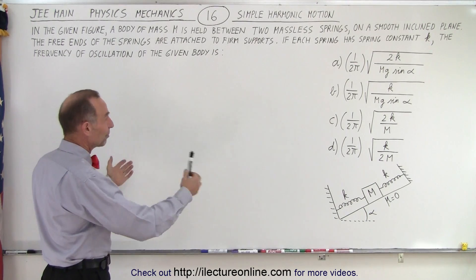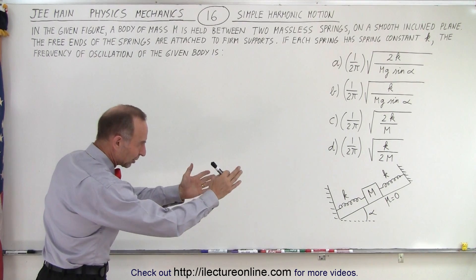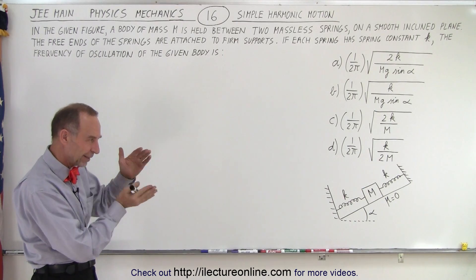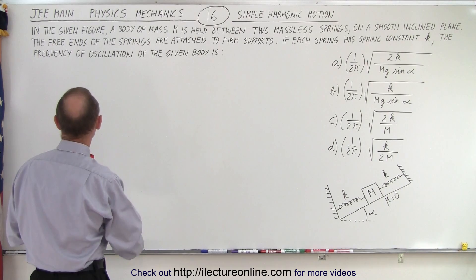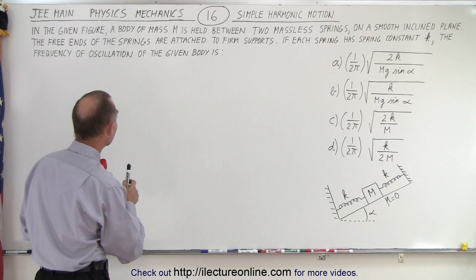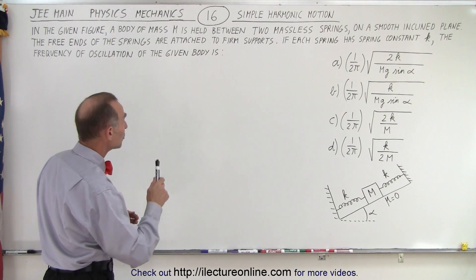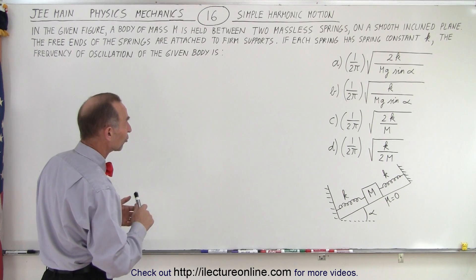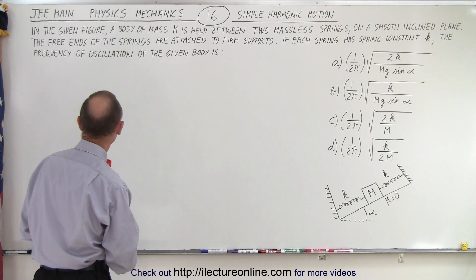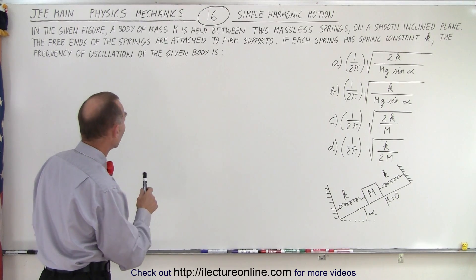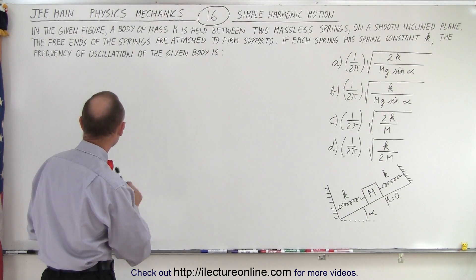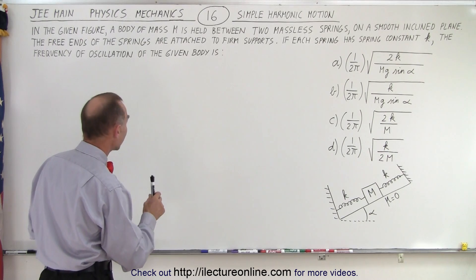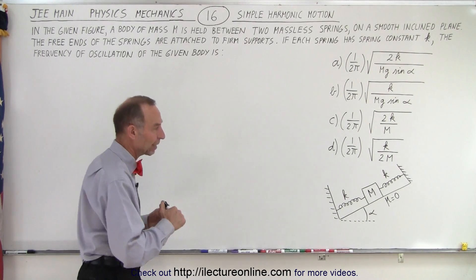Well, let's read it together. It has to do with simple harmonic motion. Already you look at the figure and you go, wait a minute, that's at an angle. What's going on there? And if you read the problem, it says: in the given figure, a body of mass M is held between two massless springs on a smooth inclined plane. The free ends of the springs are attached to firm supports. If each spring has spring constant K, the frequency of oscillation of the given body is, and they give you four possible answers.